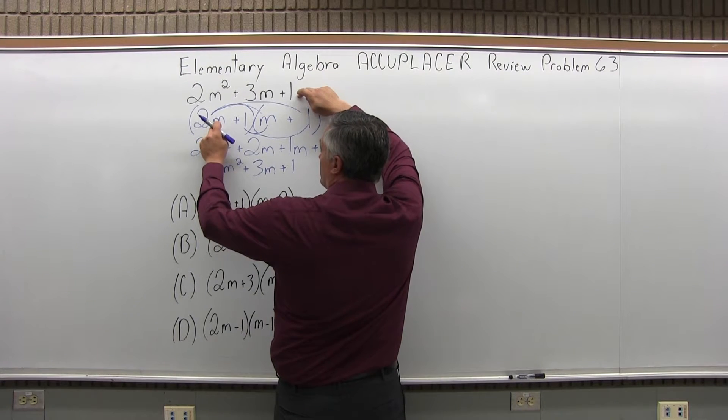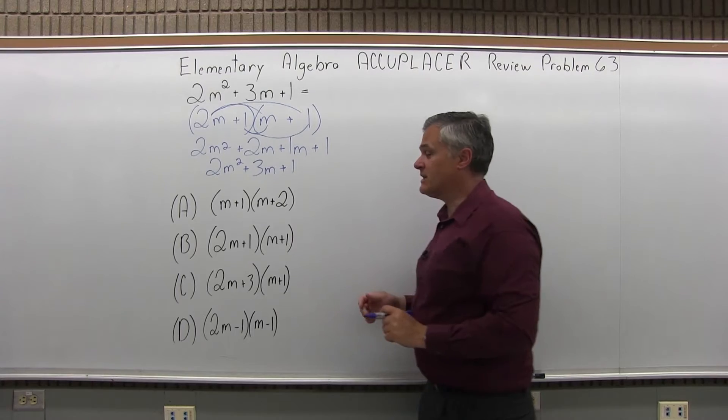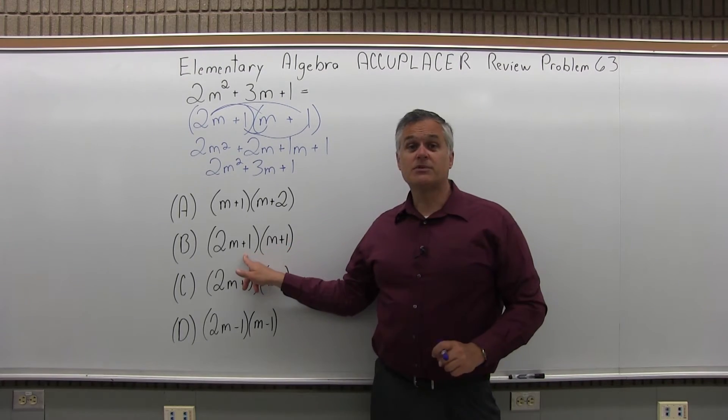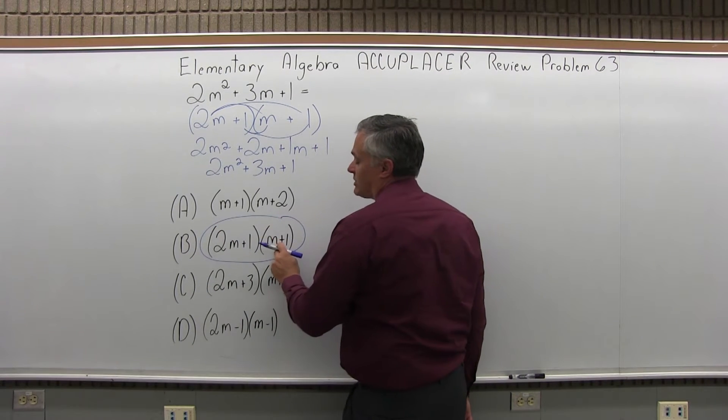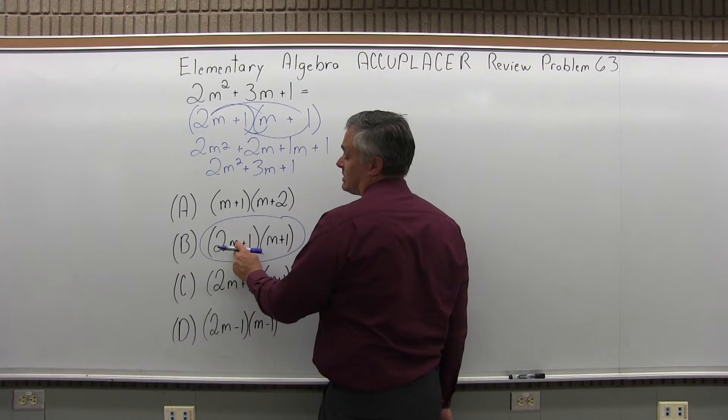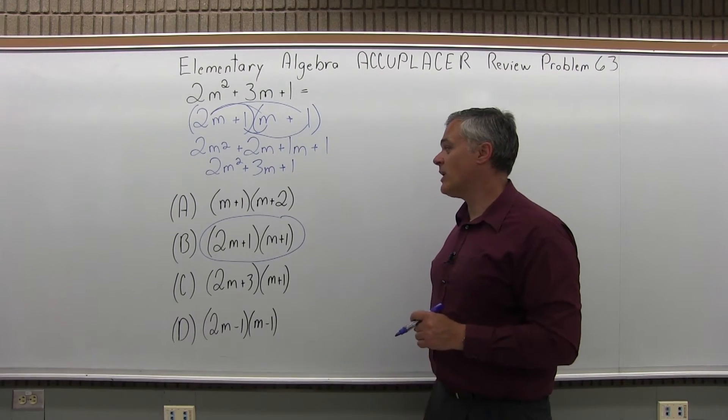So my factoring of 2m + 1 times m + 1, I'm very confident is correct. If I look, it is option B. It's a perfect match. I just want to mention that if I put the m + 1 parenthesis first and times the 2m + 1 parenthesis second, same answer. You could write it in either way.